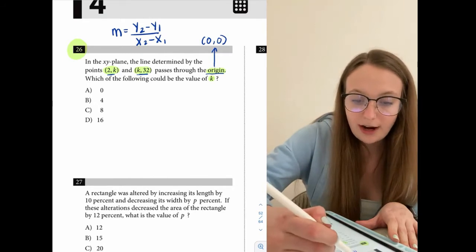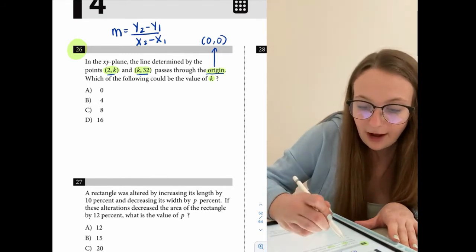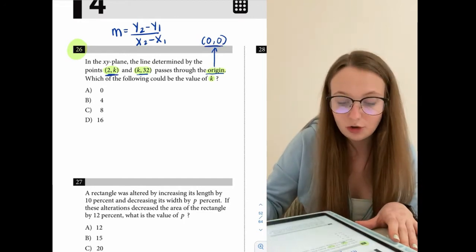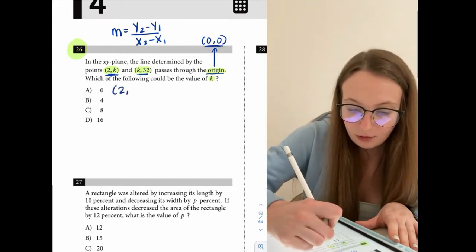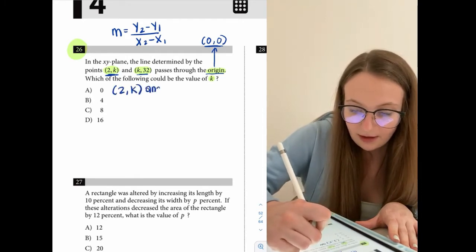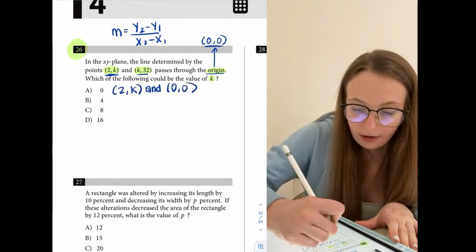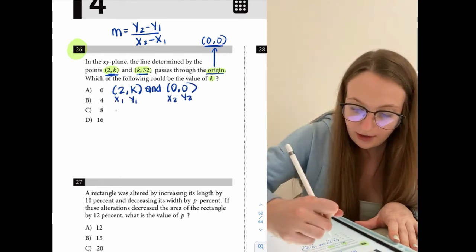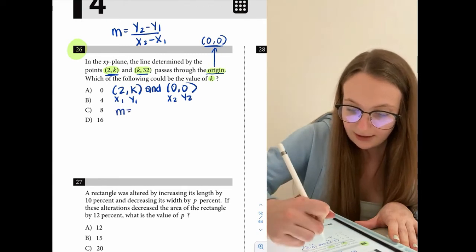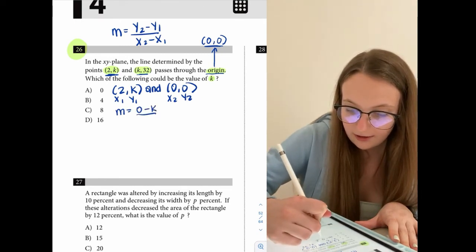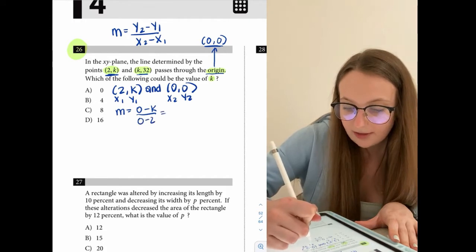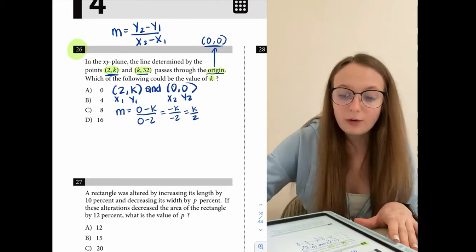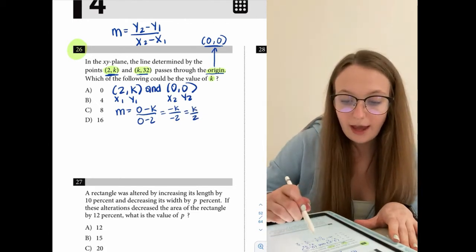But what we can do is we can try to find the slope of the line formed by (2, k) and (0, 0) because we know that those are two points on the line. So let's find the slope of (2, k) and (0, 0). So we'll call this x1, this y1, we'll call this x2 and this y2. So the slope then would be 0 minus k over 0 minus 2. So that comes out to negative k over negative 2, which is just k over 2. So we found the slope of (2, k) and (0, 0).